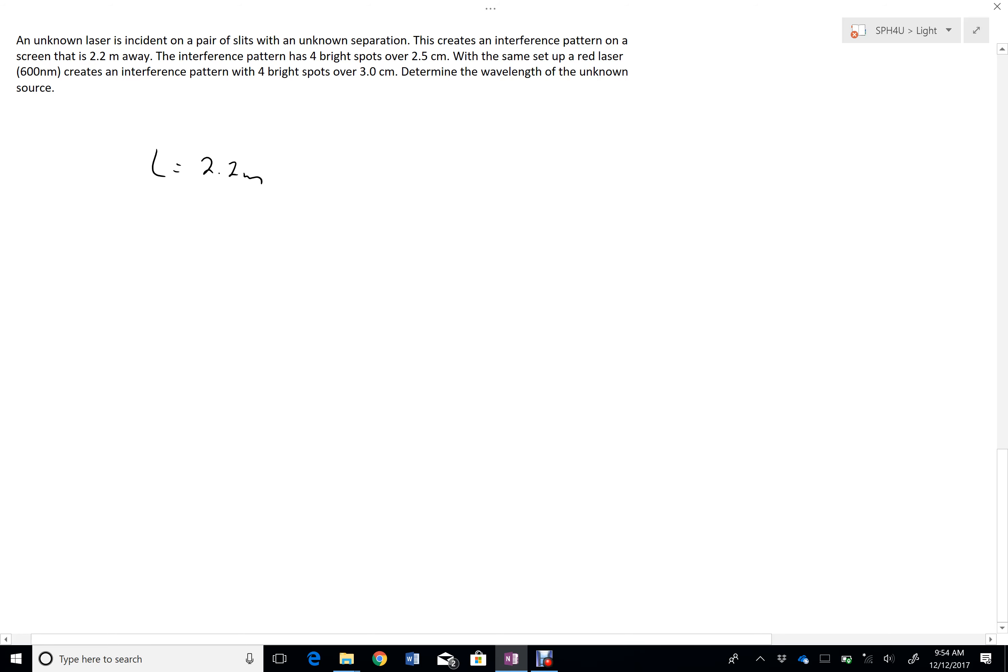The interference pattern has four bright spots over 2.5 centimeters, so delta Y equals 2.5 centimeters. Careful here, if I have four bright spots, that actually means 3 delta Y's. So this is divided by 3 to get an individual delta Y. That 3 is repeating.